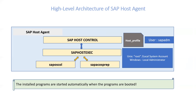SAP ACOS prep is an executable program of the adaptive computing infrastructure that is responsible for activities such as mounting the file system or activating the IP addresses. All installed programs are started automatically when the programs are booted. Now that you know the architecture of SAP Host Agent, this would also help you in analyzing data collection issues from the managed hosts.